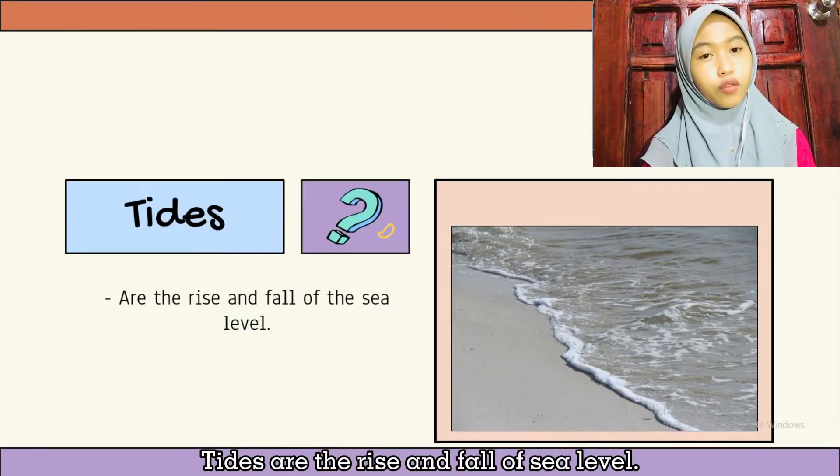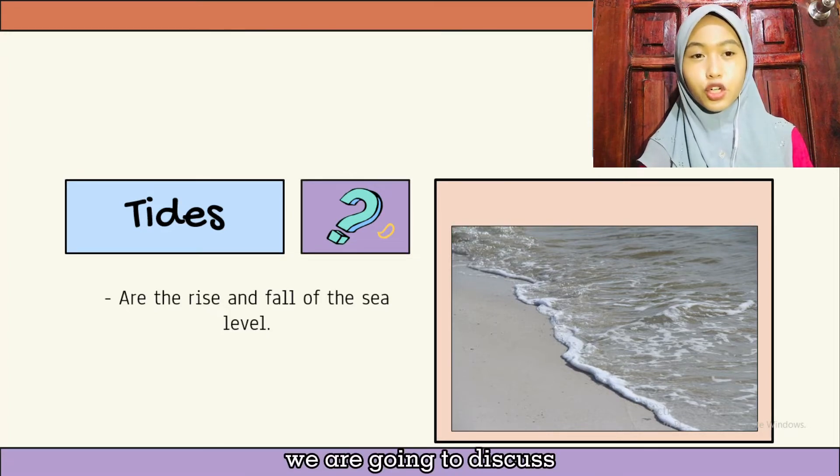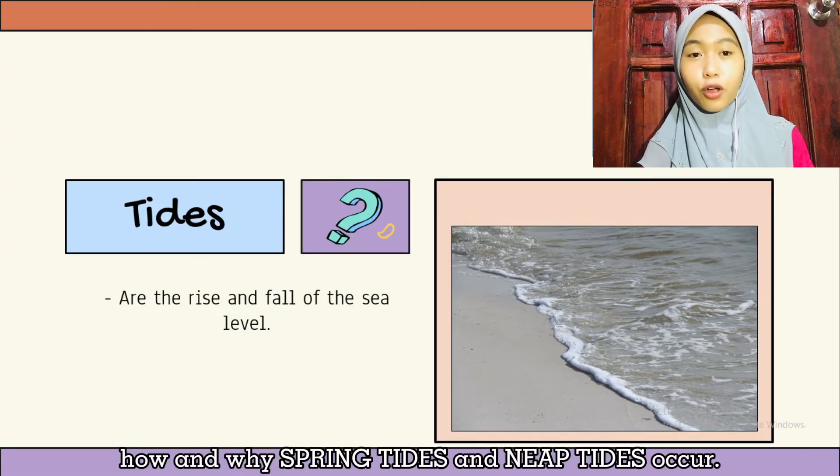Tides are the rise and fall of sea level. In this video we're going to discuss how and why spring tides and neap tides occur.